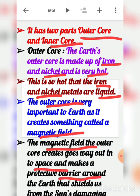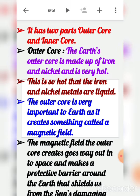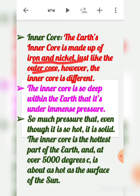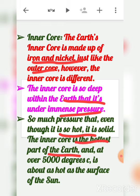The outer core is very important to earth as it creates a magnetic field. This magnetic field goes out into space and makes a protective barrier around the earth that shields us from the sun's damaging solar wind. The earth's inner core is also made up of iron and nickel, but it is different from the outer core — the inner core is so deep within the earth that it is under immense pressure, so even though it is very hot, the metals are in solid form, not liquid.